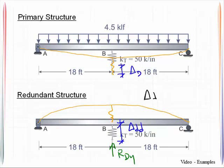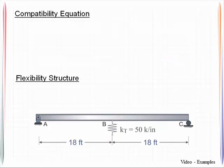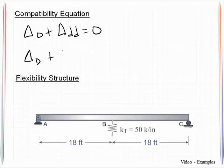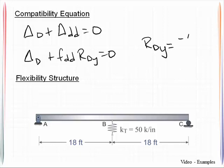Below, we sketch the redundant structure where we remove all loads and apply only the redundant force. We call this displacement delta DD, which can be rewritten as RDY times the flexibility coefficient FDD — the displacement at D due to a unit load at D. The compatibility equation is delta D plus delta DD equals zero, which gives RDY equals negative delta D over FDD.